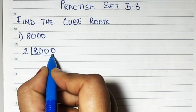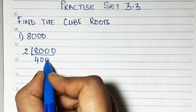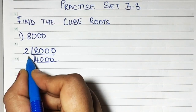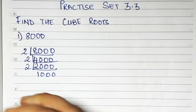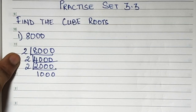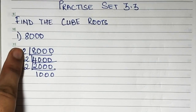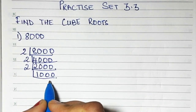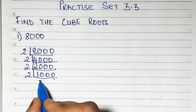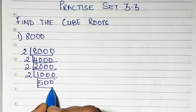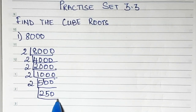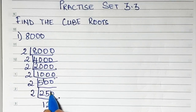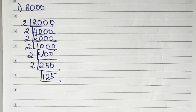Since there is a 0 at the end, we can take 2 because it is divisible by 2. Now, whichever number you take, you have to take it thrice, because since it is a cube root, you have to see that you take that number 3 times. Continuing to divide, we eventually reach 125.